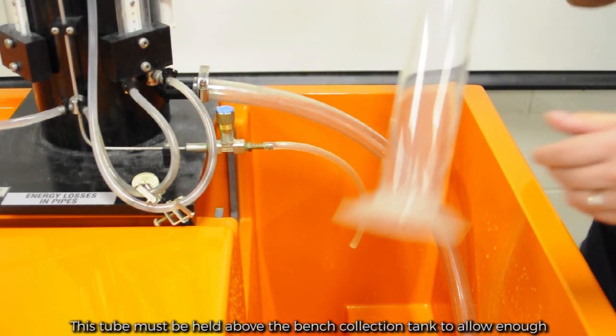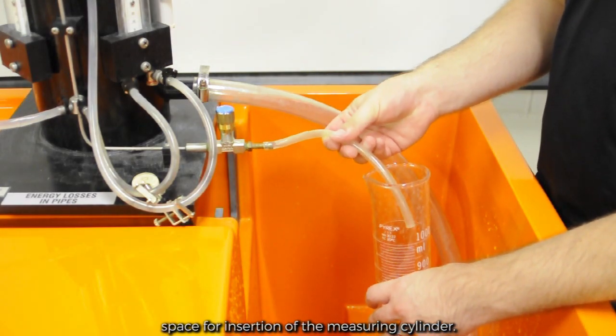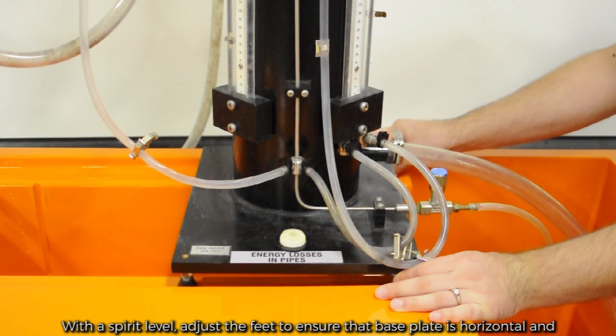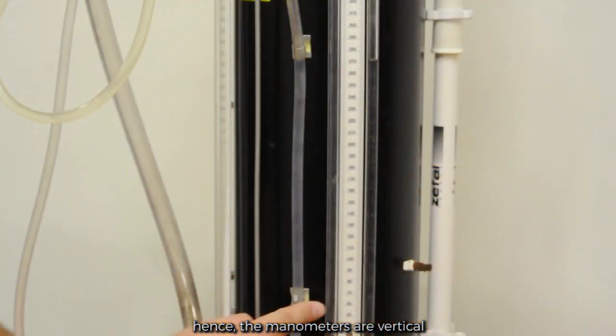This tube must be held above the bench collection tank to allow enough space for the insertion of the measuring cylinder. With the spirit level, adjust the feet to ensure that the base plate is horizontal and hence the manometers are vertical.